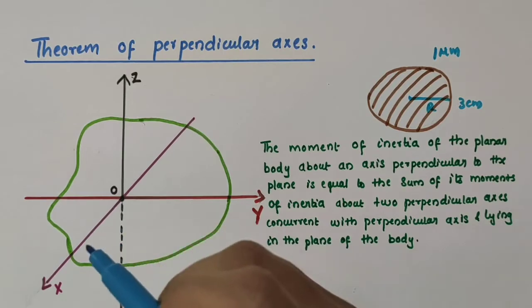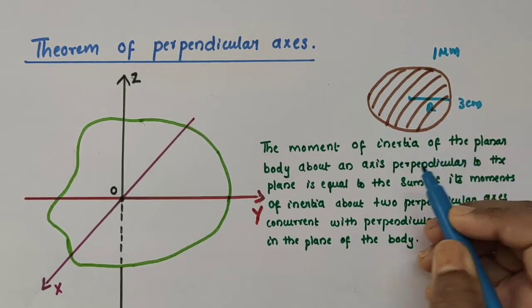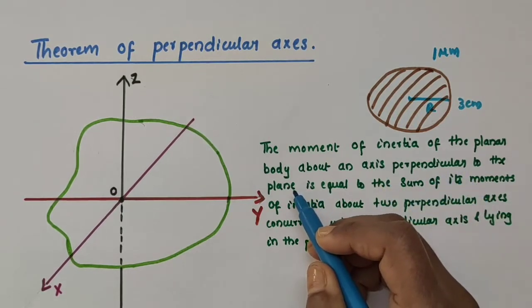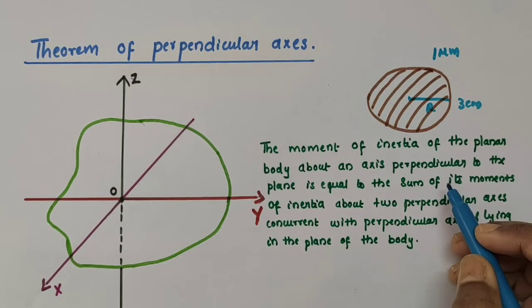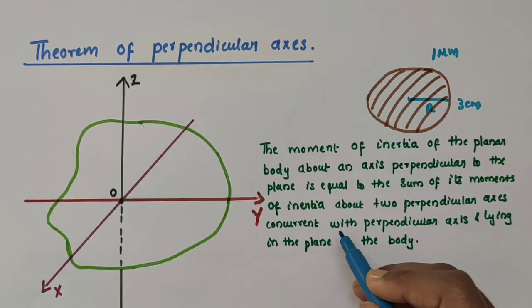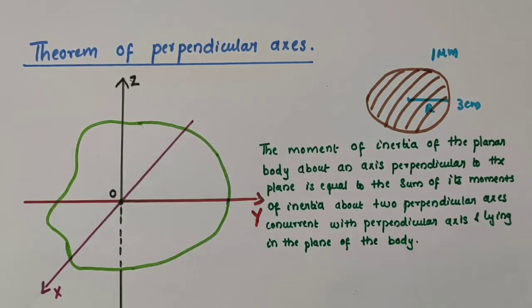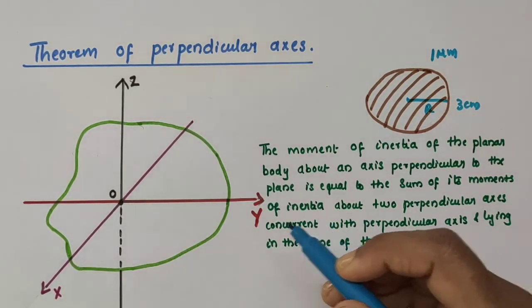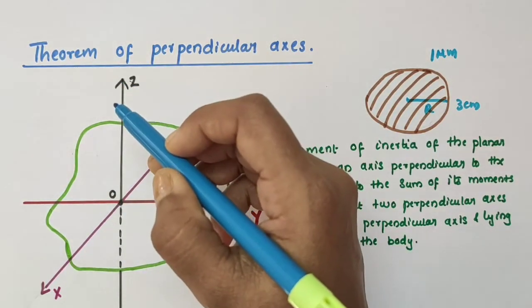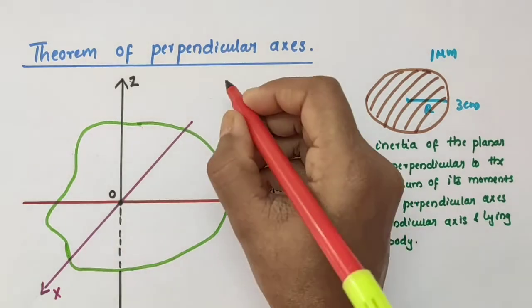According to the theorem of perpendicular axes, the moment of inertia of a planar body or lamina about an axis perpendicular to the plane is equal to the sum of its moment of inertia about two perpendicular axes concurrent with that perpendicular axis and lying in the plane of the body. Here the axis perpendicular to the plane is the Z axis, so we denote the moment of inertia about the Z axis as I subscript Z.